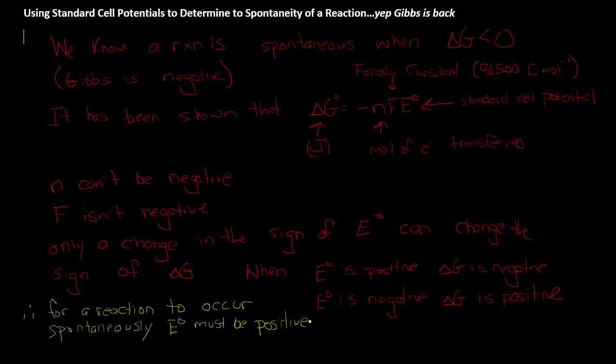It's important to note from this also that this says nothing about rate. This is just likelihood of occurring. It doesn't say anything about how fast it occurs.